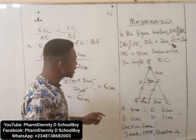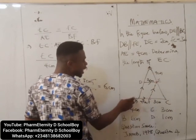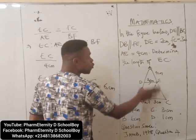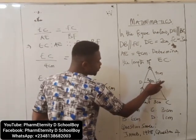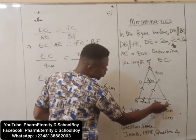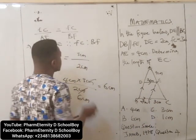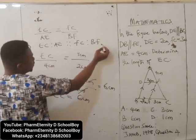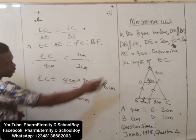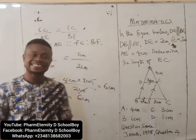Remember, the theorem said that if a line runs parallel to one side of a triangle, it divides the other sides of the same triangle into equal ratios. That means the ratio EC to AE equals EF to BF. That formed a proportion, and substituting the values gave us EC equal to 6cm.